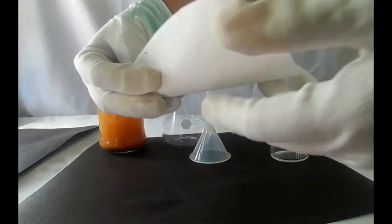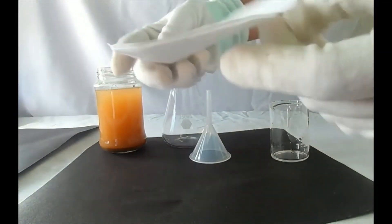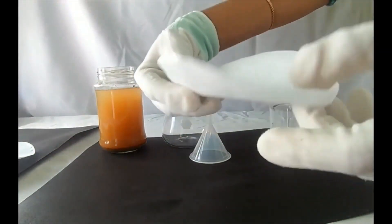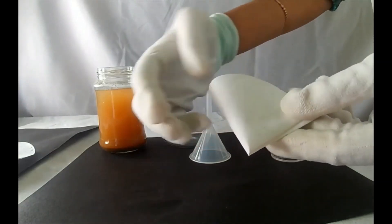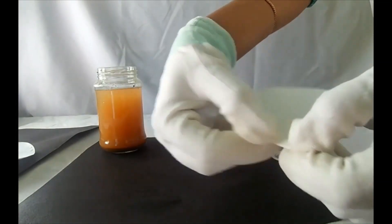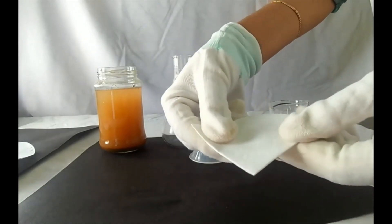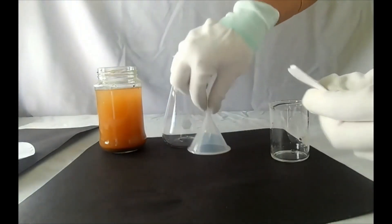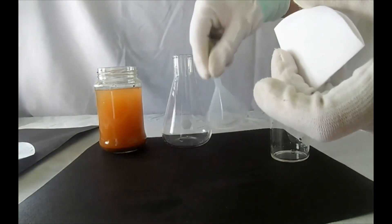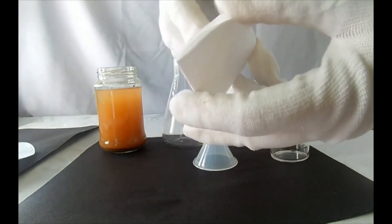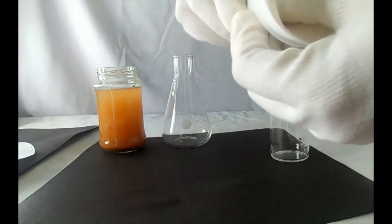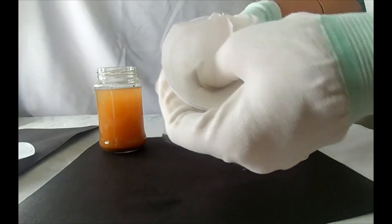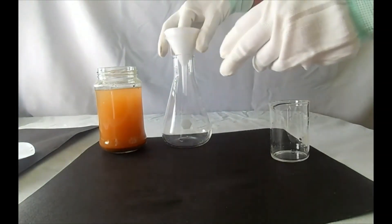Take a filter paper. Fold it in the shape of a cone. Then fix it in the funnel. Watch it carefully. The filter paper should properly fit into the funnel.